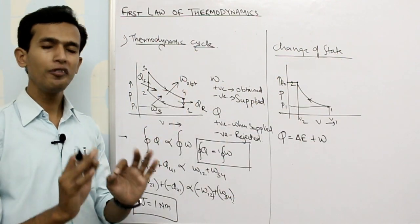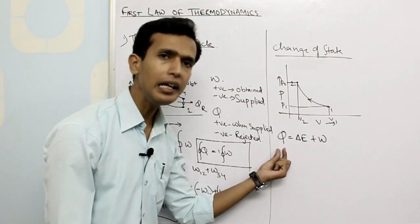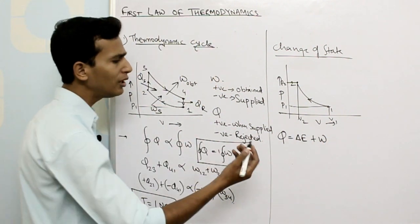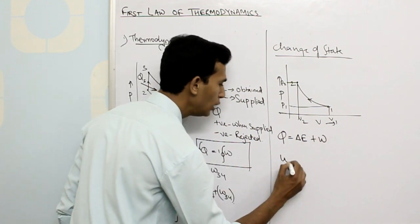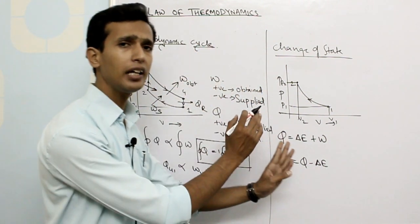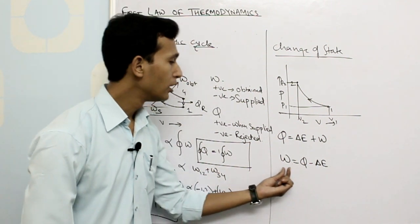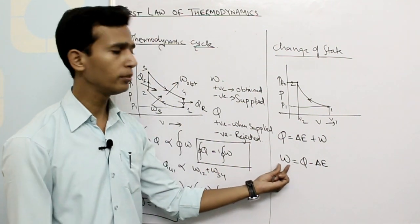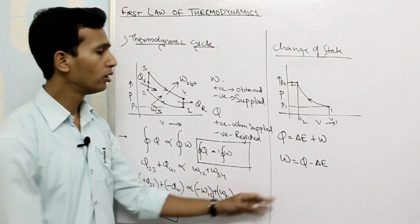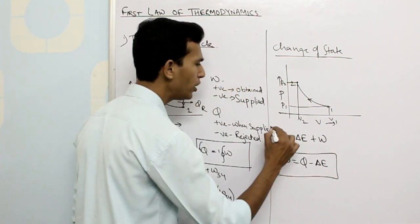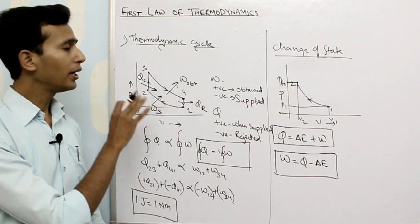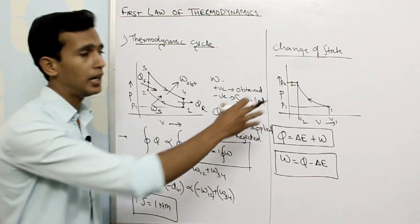The first law of thermodynamics always deals with three parameters: heat, change in internal energy, and work. In some textbooks this relation is written as W equals Q minus ΔE, which is simply a rearrangement — the amount of work obtained from the system equals the heat supplied minus the change in internal energy. Both forms are one and the same.